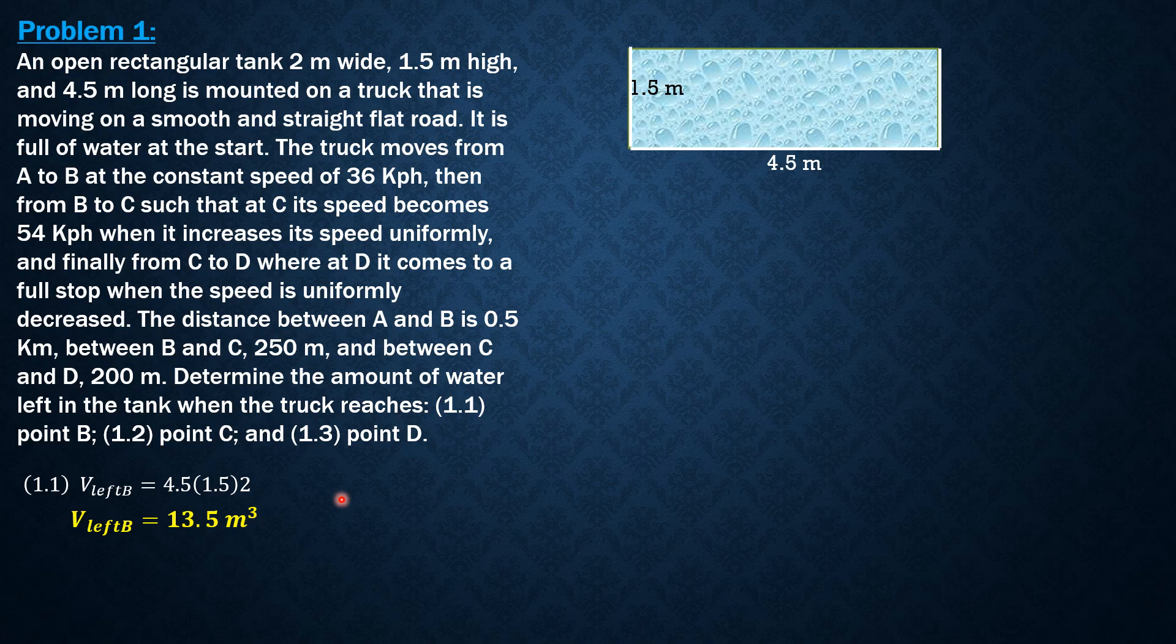A certain amount of liquid will be spilled here. So we use the formula from P6, particularly dynamics. Velocity at C squared equals velocity at B squared plus 2 times acceleration between B and C times the distance between B and C.